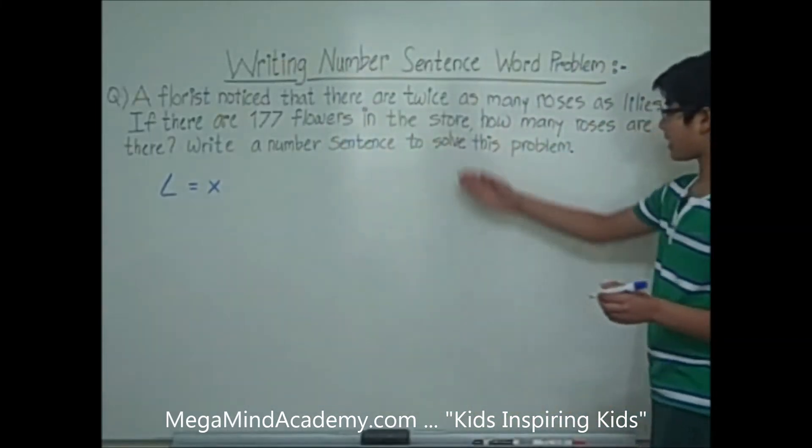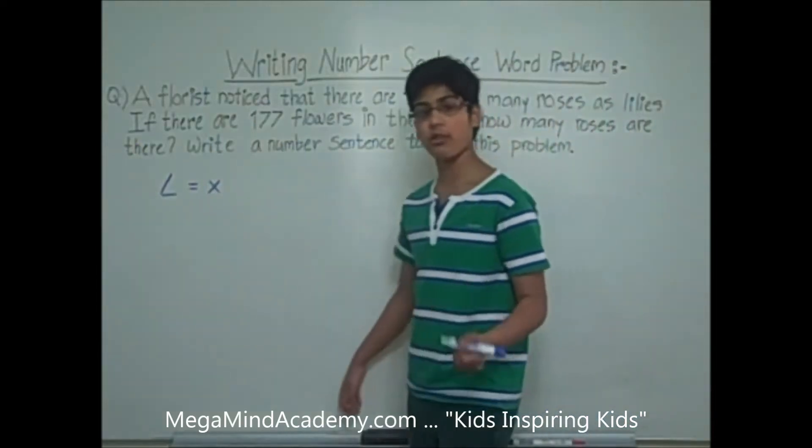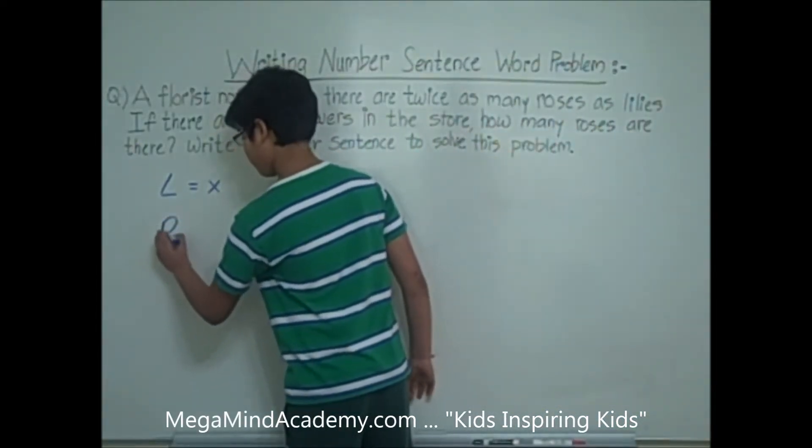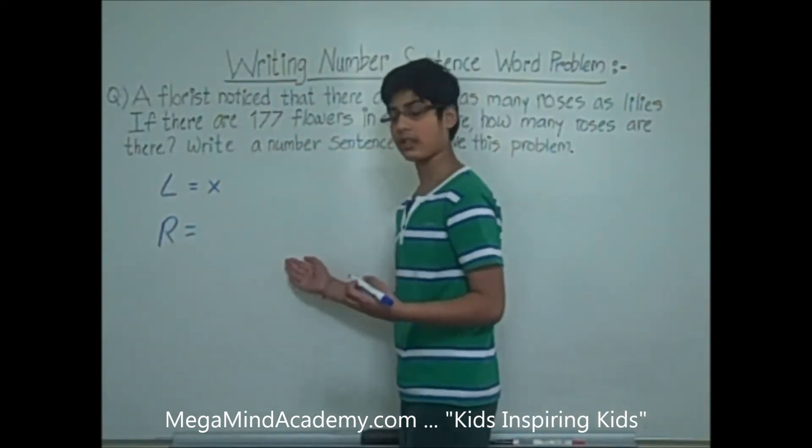So it says that there are twice as many roses as lilies. So that means that roses, R for roses, equals 2 times x, which equals 2x.